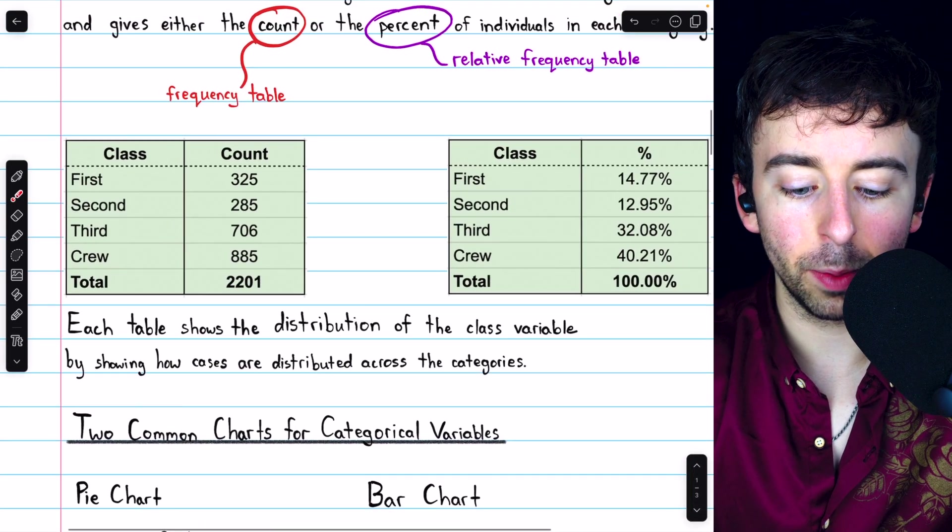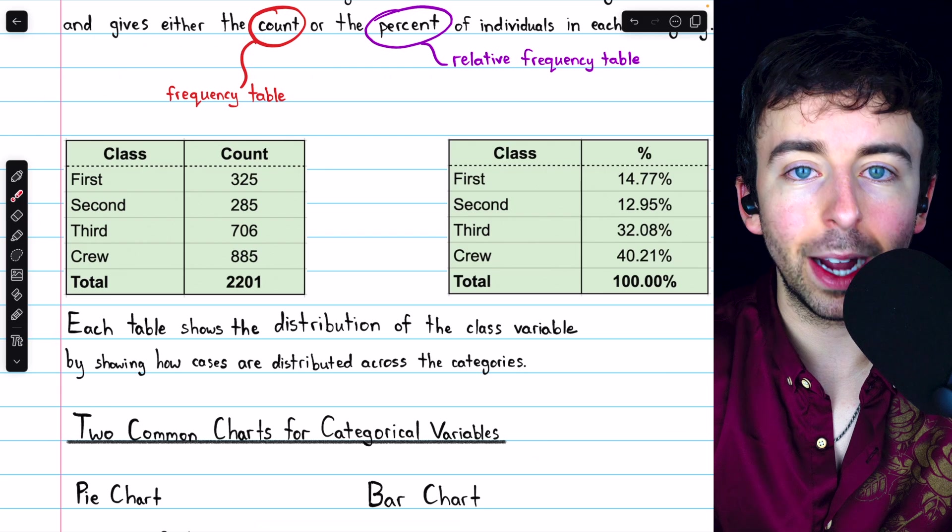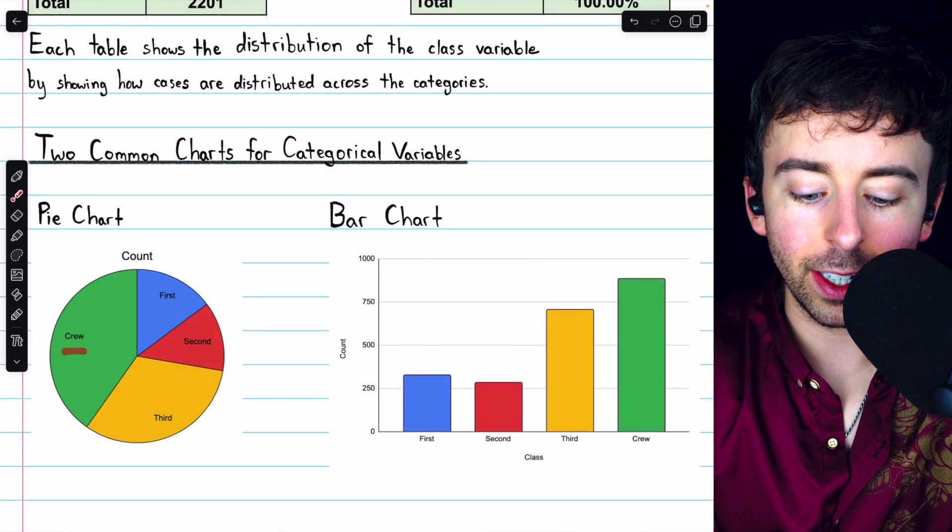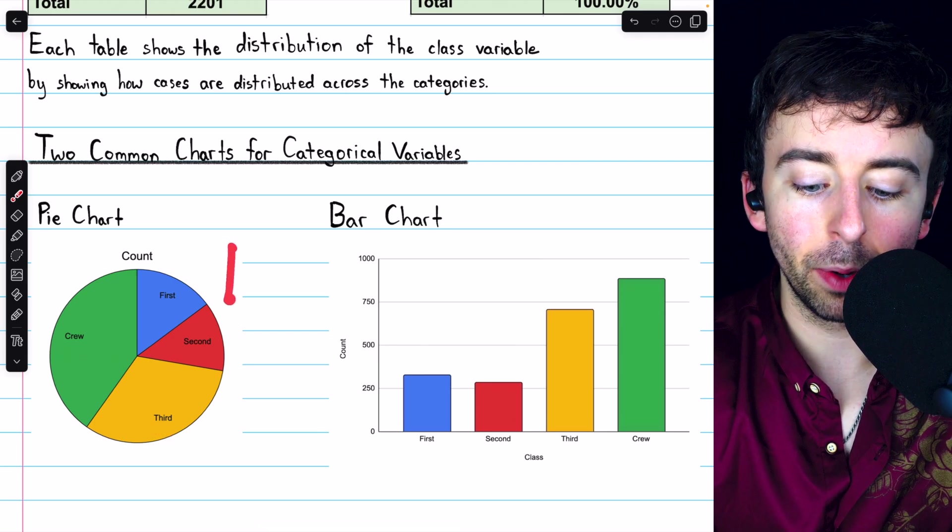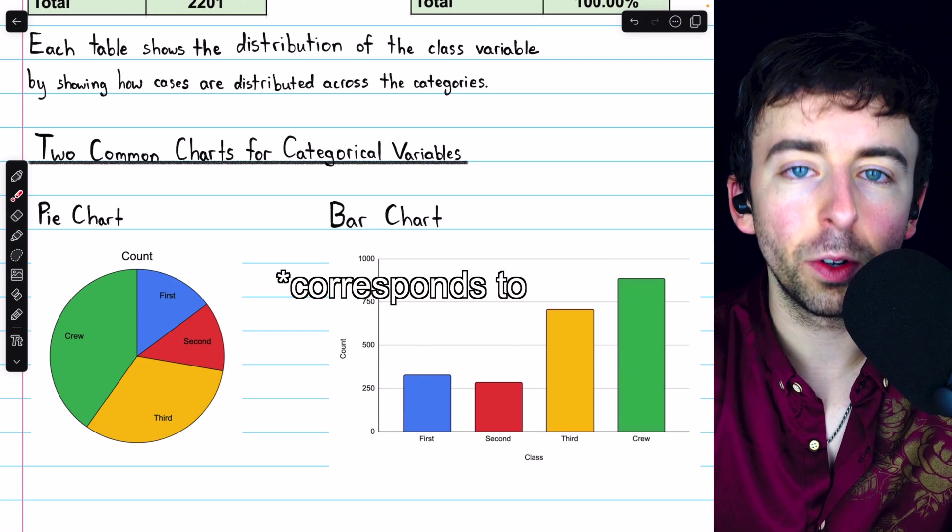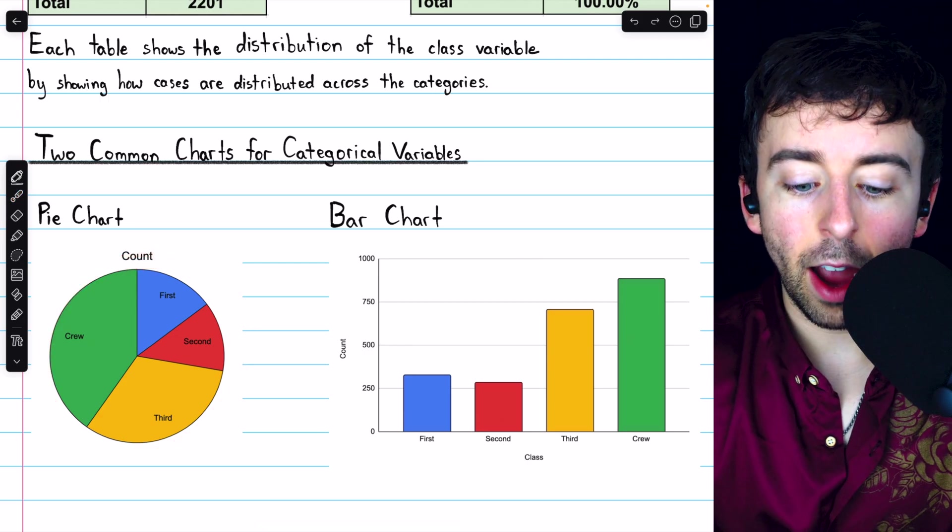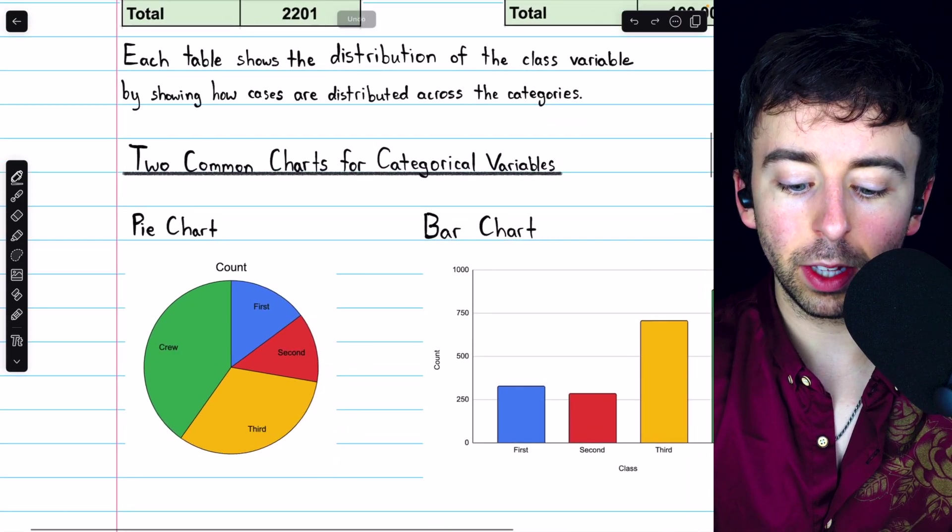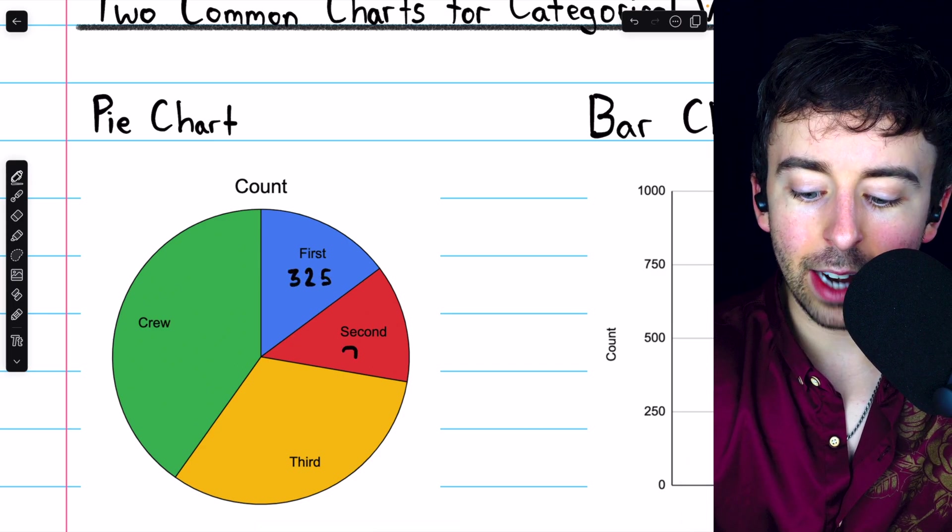Third class is second biggest, and second and first are of a similar size. That, of course, agrees with our table, where we saw that first and second class had 325 people and 285 people, respectively. Notice in the pie chart that the category represented by each slice is just written in the slice, though it could be done other ways. Oftentimes, a key will be put over here, where it just tells you which category each color responds to. There are many different ways to format a pie chart, but the idea is the same. If desired, we could also put the actual count numbers in the pie chart. For example, there were 325 people in first class, so I might go to first class and put a 325 in there, and so on.